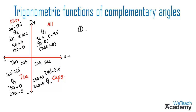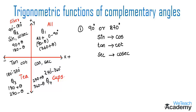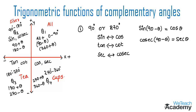Note two important points. First, for angles involving 90 degrees or 270 degrees — odd multiples — the trigonometric ratios change: sin changes to cos, tan changes to cot, secant changes to cosecant, and similarly cos changes to sin, cot to tan, cosecant to secant. For example, sin 90 minus theta equals cos theta, and cosecant 90 minus theta equals secant theta, because 90 is an odd number so the ratio changes.